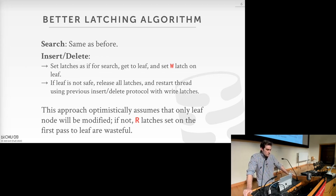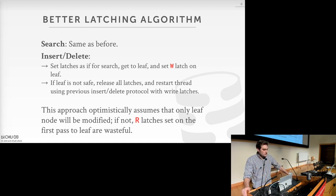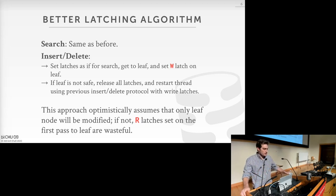Search is the same as before. For insert and delete, we set latches the same as search — using read latches all the way down to the leaf — then we set a write latch on the leaf node. If the leaf is safe (it doesn't need to split or merge), we're done. If it's not safe, we restart from the root acquiring write latches. This is why we call it optimistic: we optimistically assume we won't need write latches all the way down, versus pessimistically acquiring them as we descend.